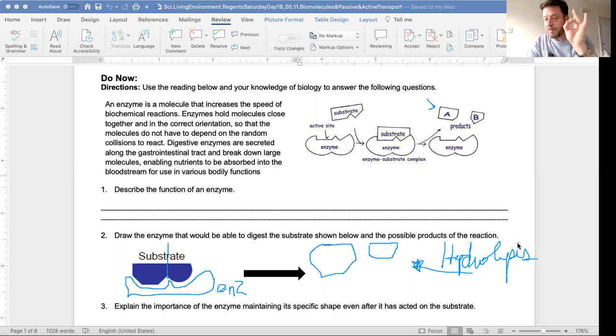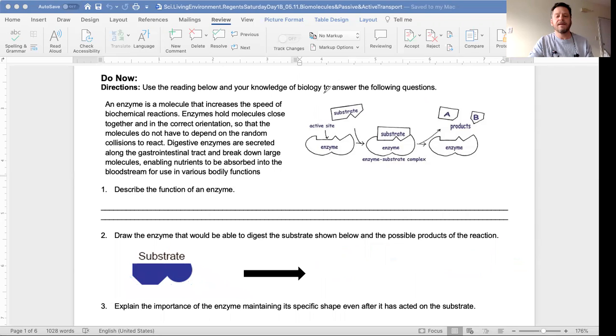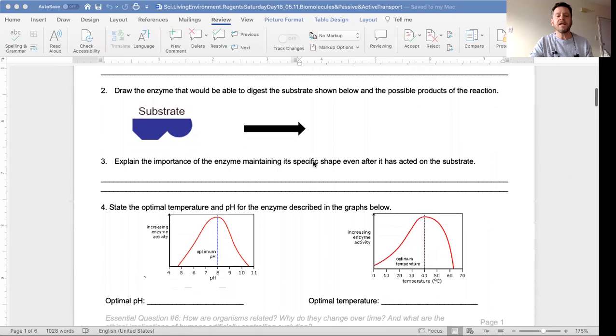Remember, enzymes depend on proper temperature and proper pH. Let's clear this out and go down to the next one. Explain the importance of an enzyme maintaining its specific shape even after it has acted on the substrate. Well, enzymes retain shape so that they can act again.